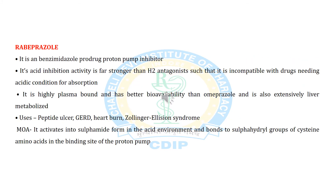Rabeprazole is a benzimidazole prodrug proton pump inhibitor. Its acid secretion inhibition activity is far stronger than H2 antagonists and is incompatible with drugs needing acidic conditions for absorption. It is highly plasma protein bound with better bioavailability than omeprazole and is also extensively liver metabolized. Uses include peptic ulcer, Zollinger-Ellison syndrome, heartburn, and GERD. It activates into sulfenamide form in an acidic environment and binds to the sulfhydryl group of cysteine amino acid at the binding site of the proton pump.